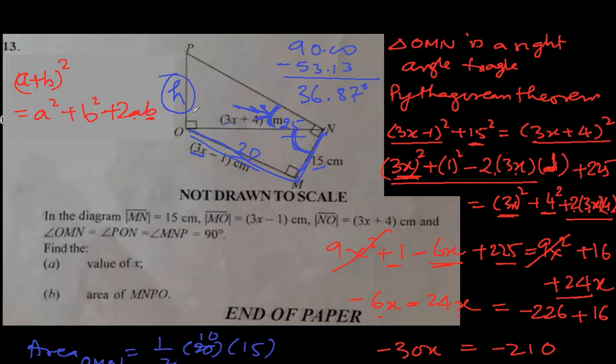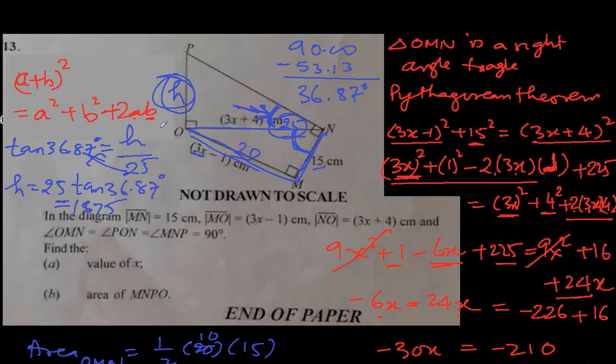This time we know the angle so no need to write any alphabet. Tan of 36.87 degrees is equal to opposite which is h in this case over adjacent which is 25 centimeter in this case. So h is 25 multiplied by tan 36.87 by cross multiplication. Let me do that. I got this as 18.75. This height is 18.75 and now we can find the area of this triangle as well.